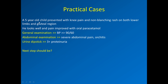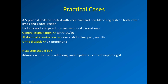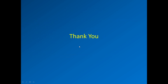Practical case 2: A five-year-old with knee pain and a non-blanching rash on both lower limbs. Pain improved with oral paracetamol. Blood pressure 90/60. Abdominal examination shows severe abdominal pain, and there is orchitis. Urine dipstick shows 3+ proteinuria. This gives three reasons for admission and consultation: severe abdominal pain, orchitis, and 3+ proteinuria. The next step is admission, steroids to control severe abdominal pain, additional investigations, and nephrology consultation. This concludes the case of Henoch-Schönlein Purpura. I hope this video was helpful — thank you for watching.